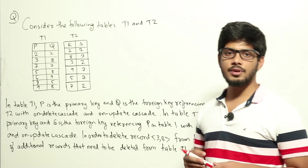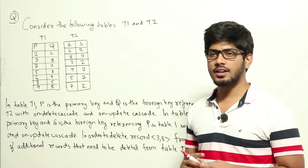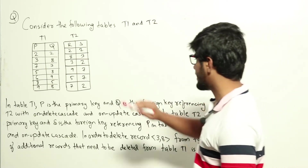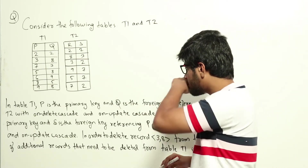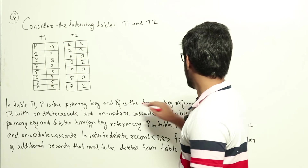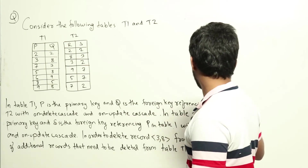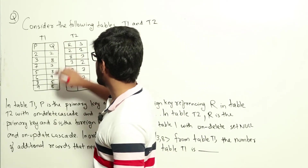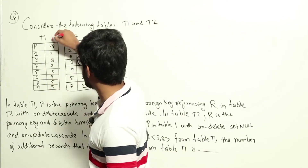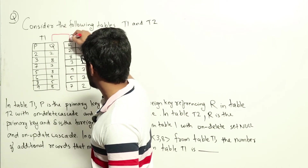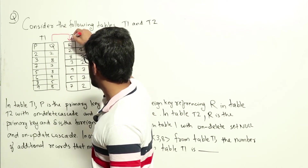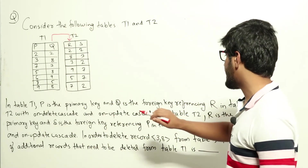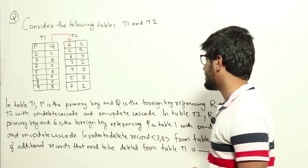This is a question from DBMS topic regarding referential integrity. Let us look at the constraints. Q is a foreign key referencing R in table T2, and it specifies ON DELETE CASCADE and ON UPDATE CASCADE.